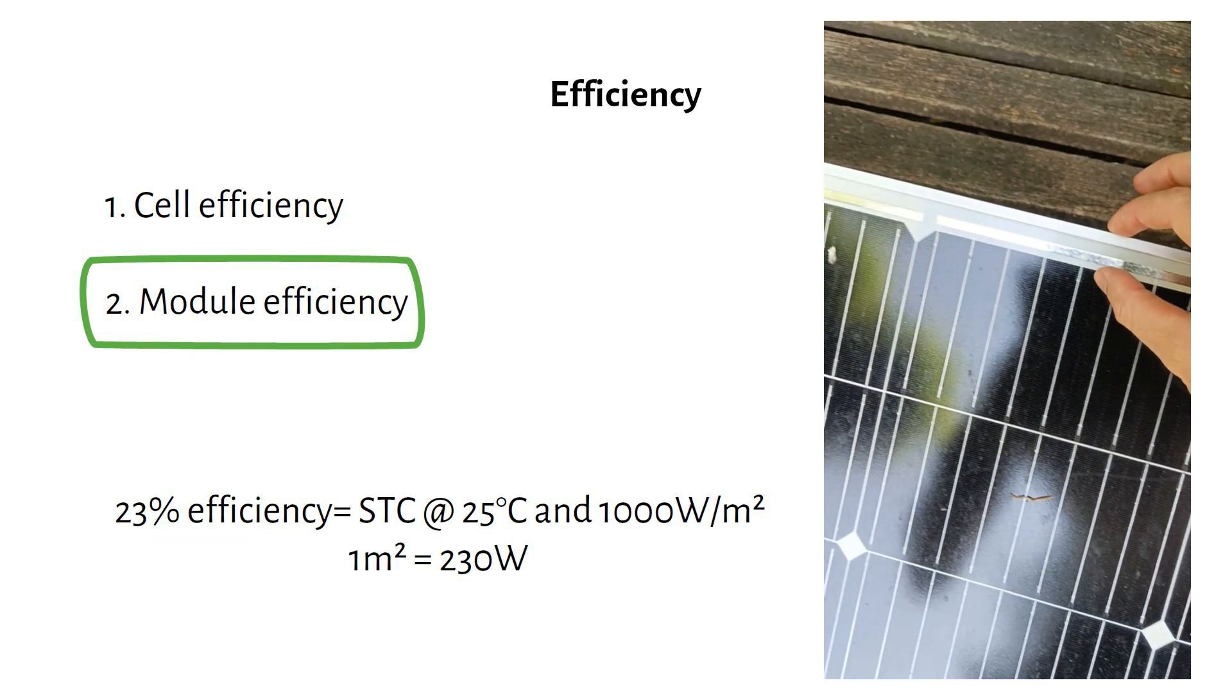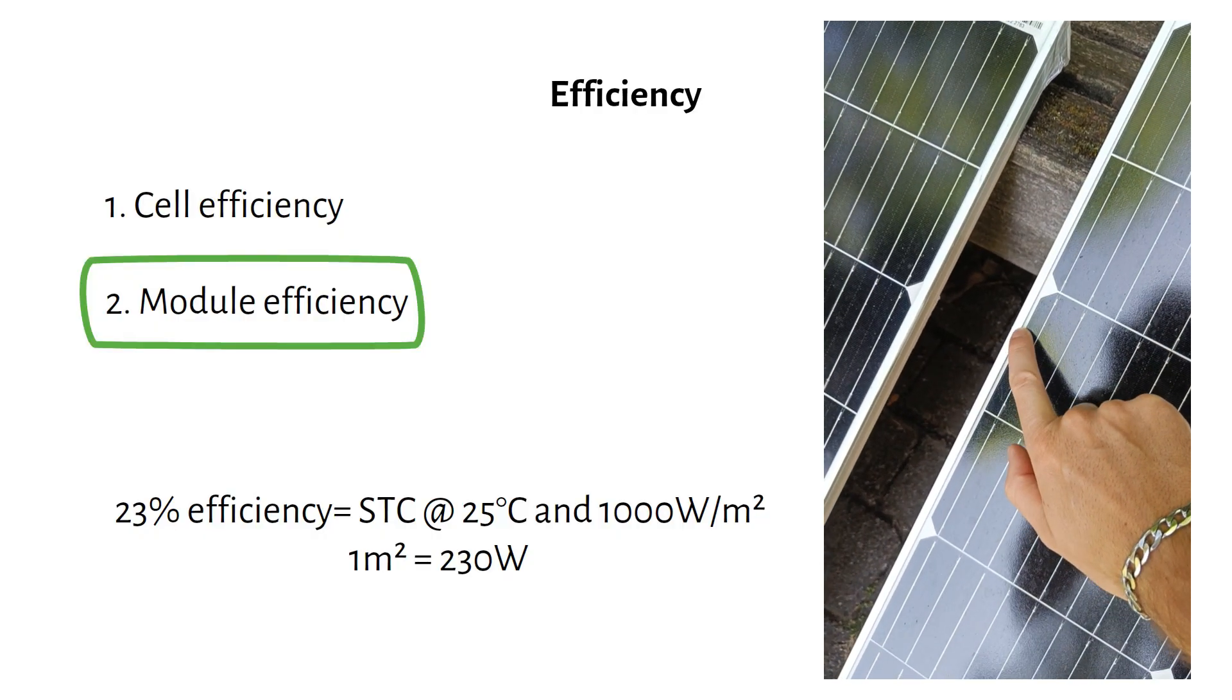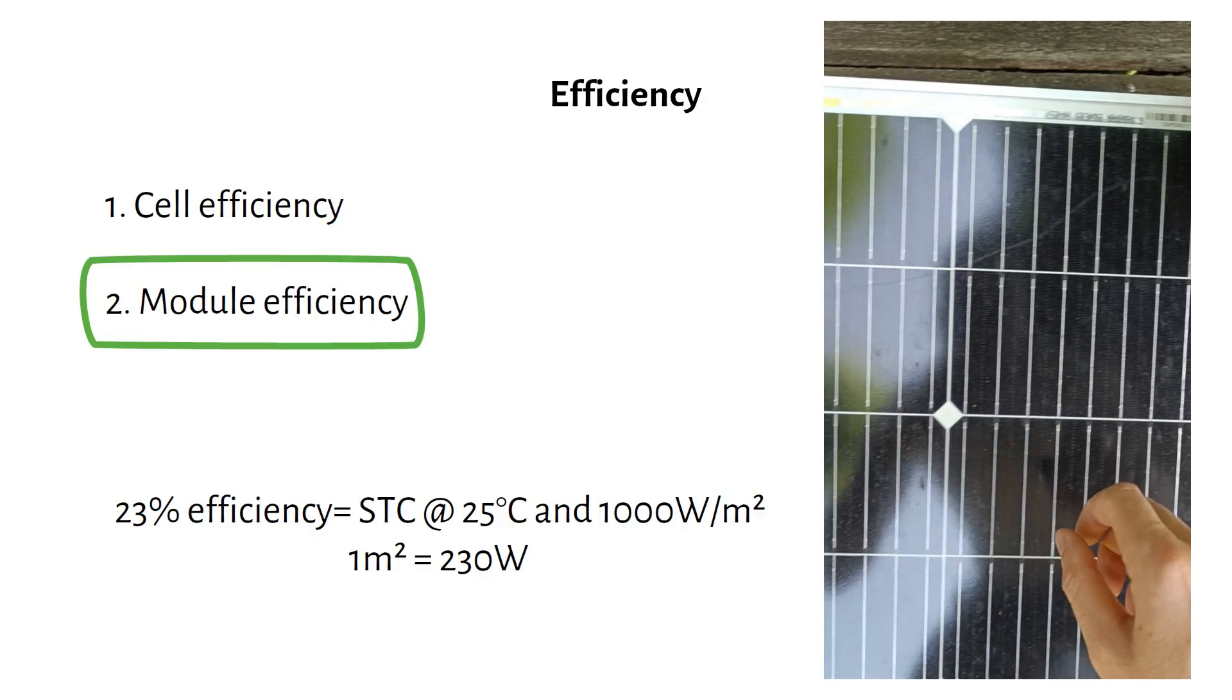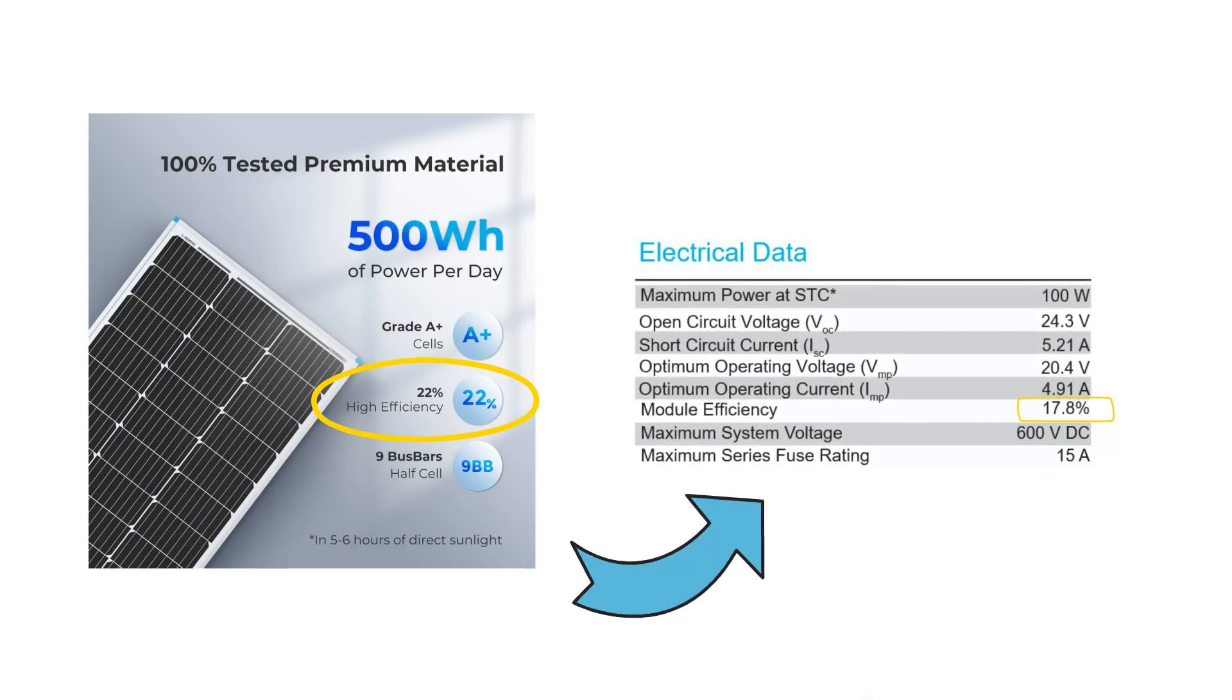Generally, larger panels are more efficient, because there's less space wasted on the solar panel busbars and the frame. Some brands advertise cell efficiency instead of module efficiency. For example, this panel lists a 22% cell efficiency on its 100 watt panel. But the real module efficiency is just 17.8%. Not very transparent.